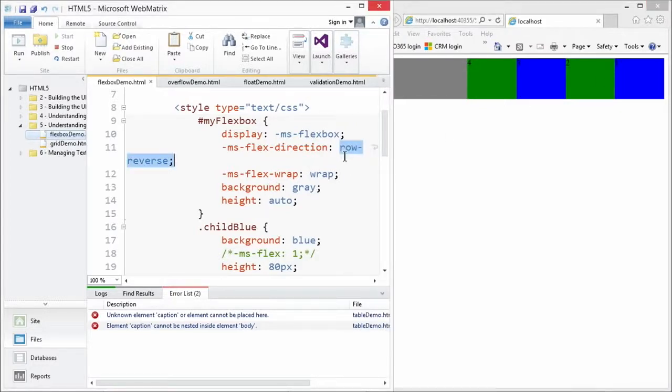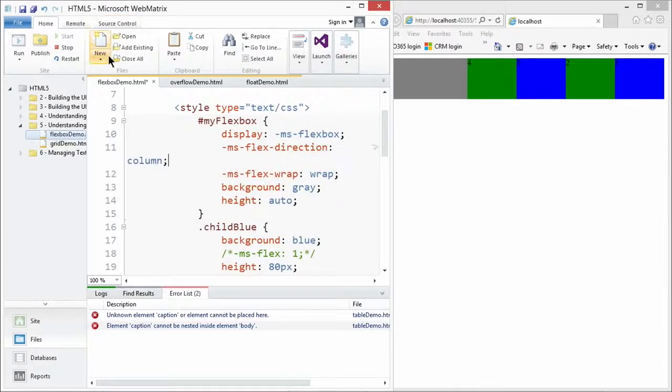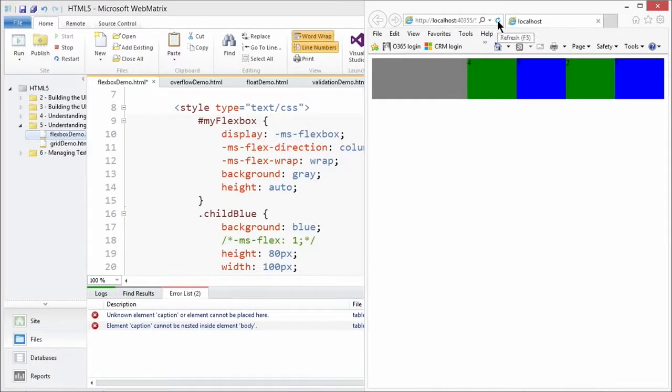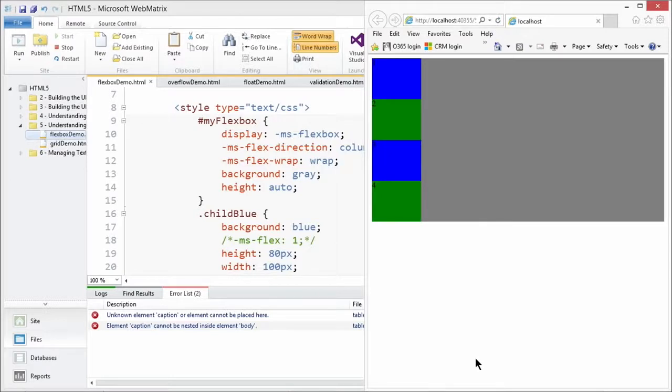And then, of course, if we go ahead and we change this to column, all of a sudden we're going to see - I forgot to save - now we're going to see all of our children of our Flex box, our Flex box items being displayed in a column. And, of course, you can reverse that as well. Remember that the wrap value for the Flex wrap property allows us to make sure that if we decrease the size of our screen, our Flex box items will drop down to the next line and they'll wrap around to the next line.